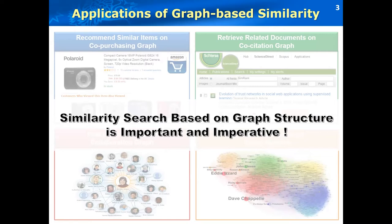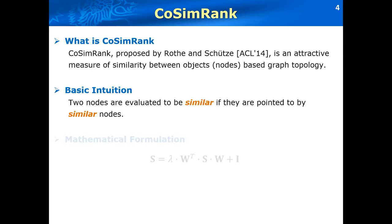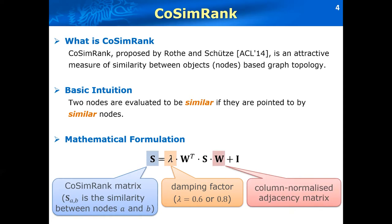Among the existing link-based similarity measures, COSIM rank proposed by Rossi in ACL 2014 is an attractive one due to its simple and intuitive philosophy. The two nodes are evaluated as similar if they are pointed to by similar nodes. Mathematically, the above intuition can be formulated as follows. S is the COSIM rank matrix. Lambda is the damping factor, which is typically set to 0.6 or 0.8. And W is a column normalized adjacency matrix, and I is the identity matrix.